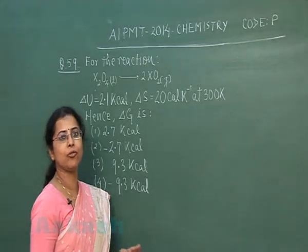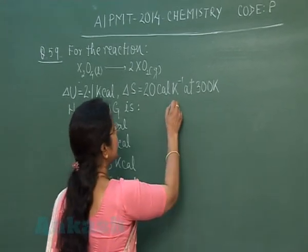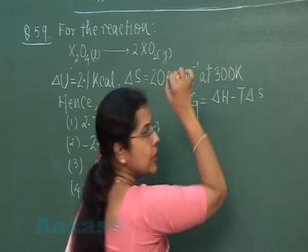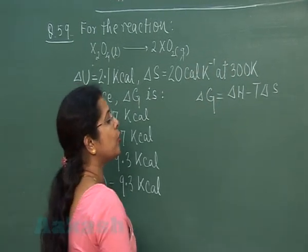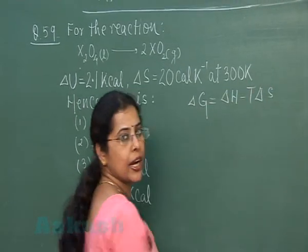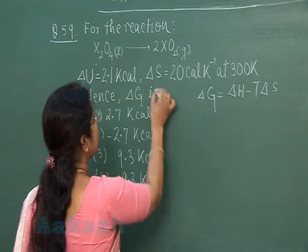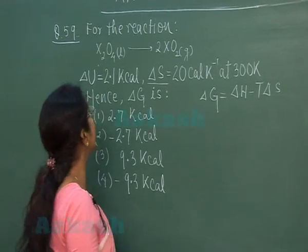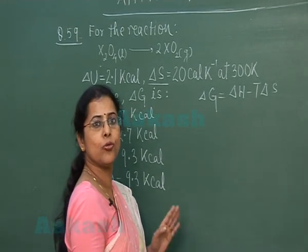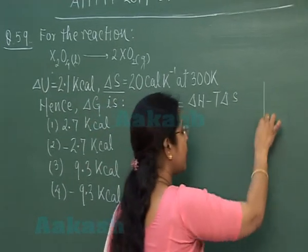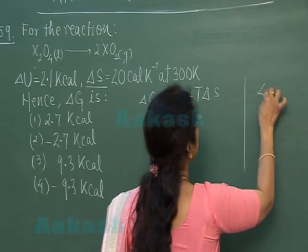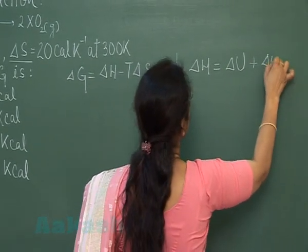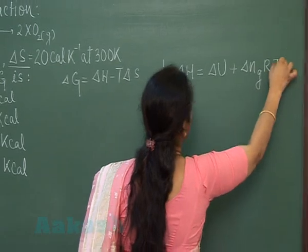In this question we have to calculate ΔG, and ΔG = ΔH − TΔS. We need two parameters: enthalpy change and entropy change. Entropy change is given, but ΔH is not given — instead the given value is ΔU, which is internal energy change. So first we have to calculate ΔH using the relationship ΔH = ΔU + ΔngRT.